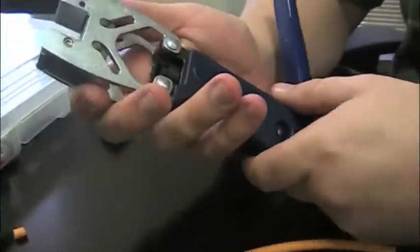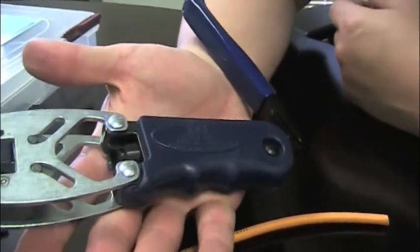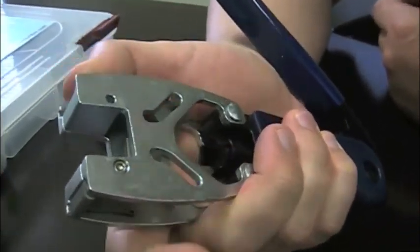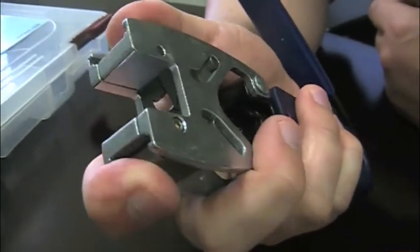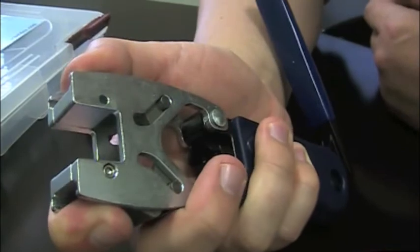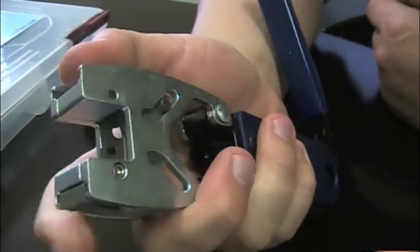Next thing we're going to do is hold the crimp tool in one hand like this. Pull the first die set down with your thumb. Again, you can see it's spring-loaded. The second one you'll pull down with your index finger. You'll hold both those open like that. You see if you're released, they just spring right back into place.